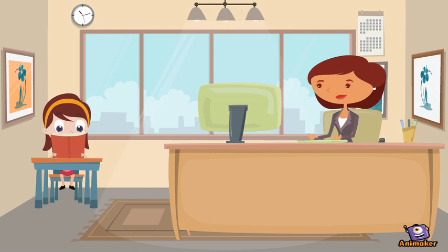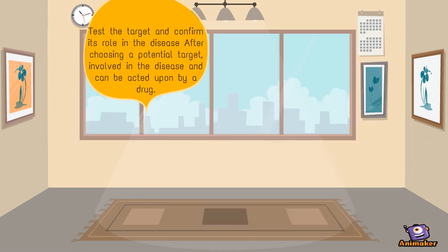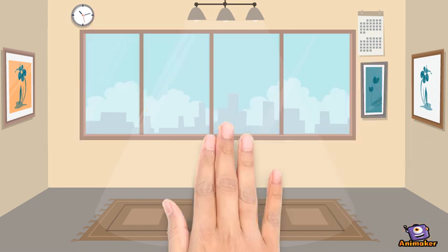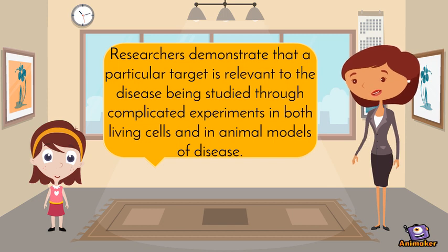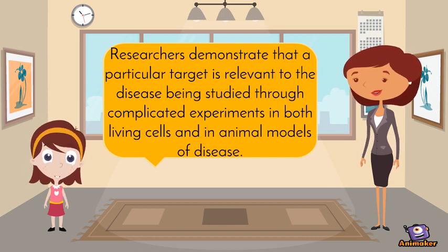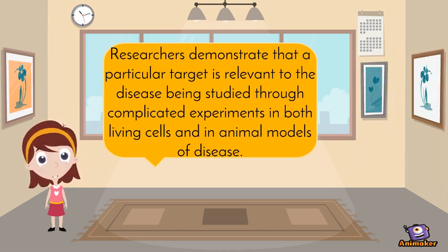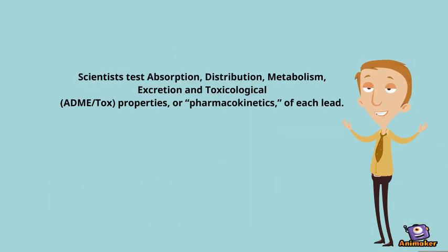Test the target and confirm its role in the disease. After choosing a potential target, scientists must show that it actually is involved in the disease and can be acted upon by a drug. Target validation is crucial to help scientists avoid research paths that look promising, but ultimately lead to dead ends.